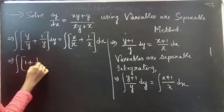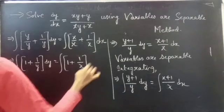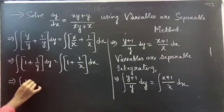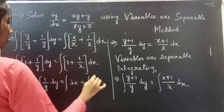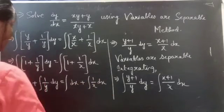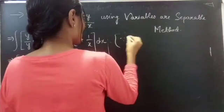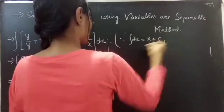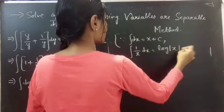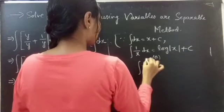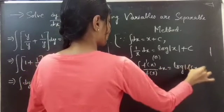y/y is 1, so we get integral of (1 + 1/y) dy = integral of (1 + 1/x) dx, which gives integral dy + integral 1/y dy = integral dx + integral 1/x dx. We know that integral dx = x + c, and integral 1/x dx = log|x| + c. Also, integral f'(x)/f(x) dx = log|f(x)| + c.